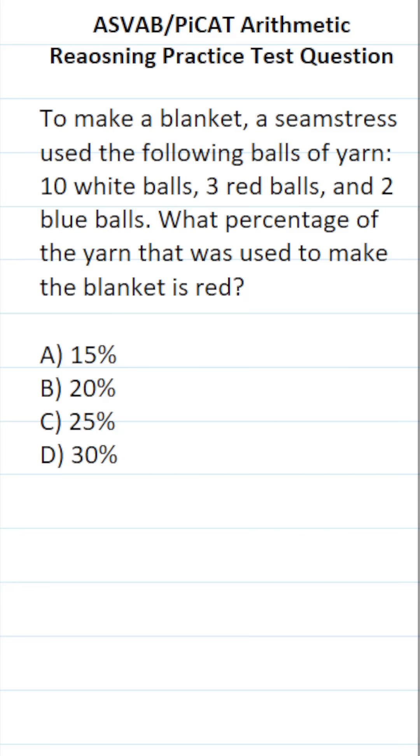This arithmetic reasoning practice test question for the ASVAB and PiCAT says, to make a blanket, a seamstress used the following balls of yarn: 10 white balls, 3 red balls, and 2 blue balls. What percentage of the yarn that was used to make the blanket is red?